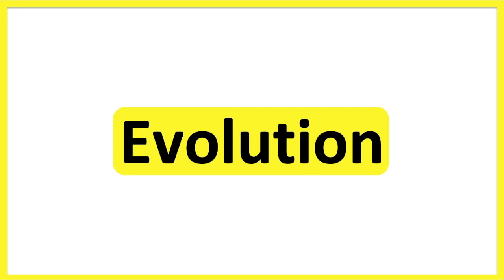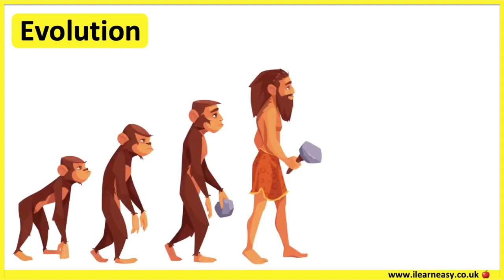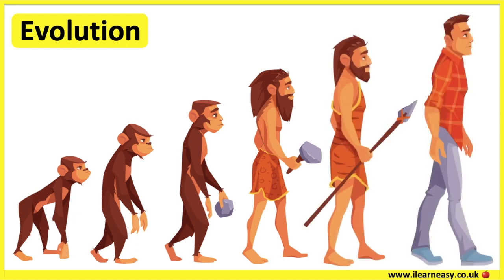Evolution. The theory of evolution states that living things have adapted and changed over time. All living organisms have changed from as they were millions of years ago. This is due to changes and adaptations. Organisms adapt to changing environments.